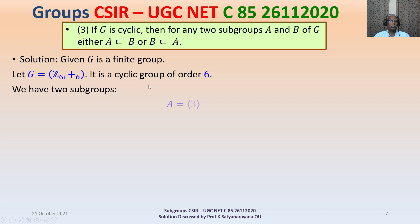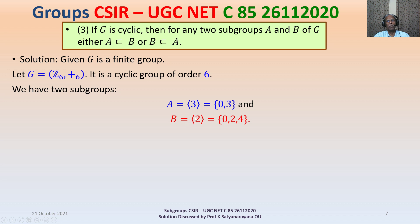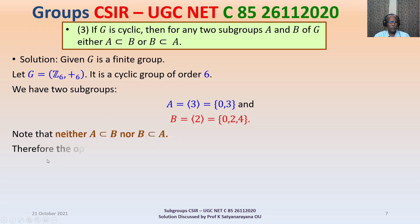We have two subgroups: A = ⟨3⟩ = {0, 3} and B = ⟨2⟩ = {0, 2, 4}. Neither A is contained in B nor B is contained in A. Therefore Option 3 is not true.